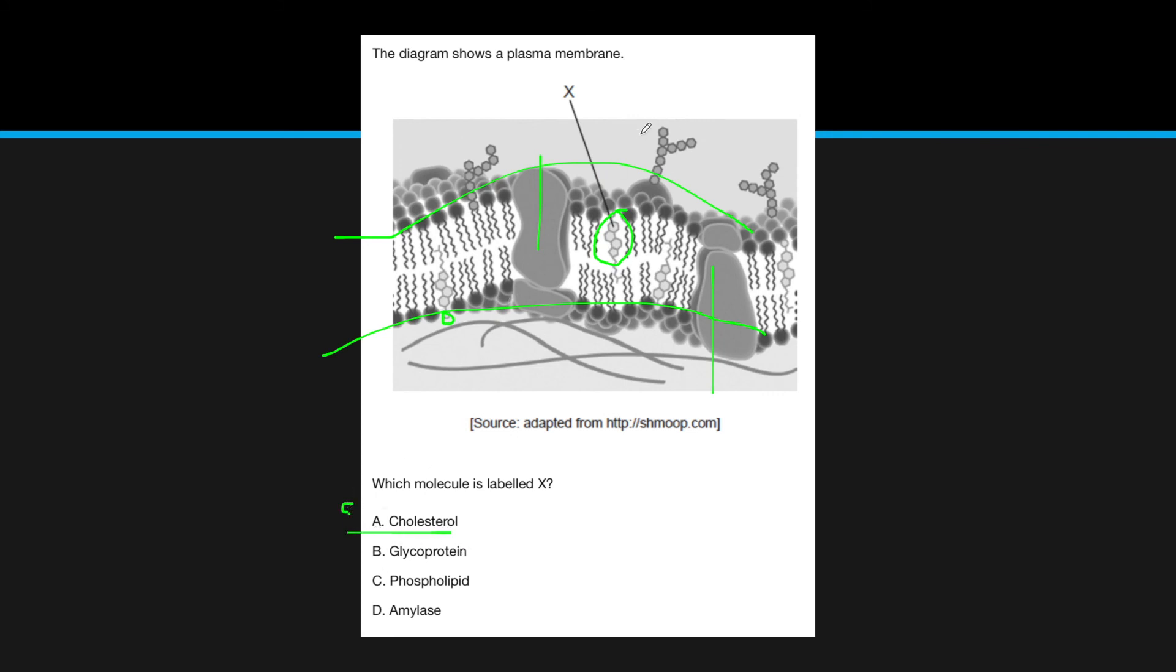Glycoprotein, as we discussed, has tails sticking out. Phospholipid? No, cholesterol is not as abundant within the membrane. Amylase is an enzyme that helps in breakdown of starch, not found in membranes, so it's cholesterol.